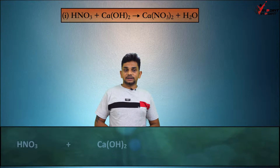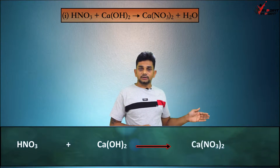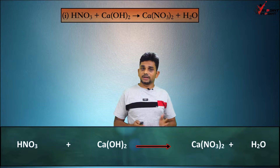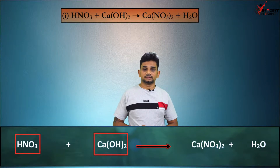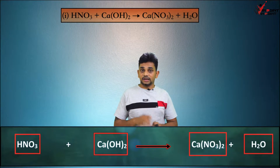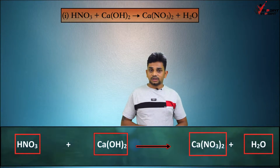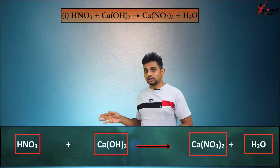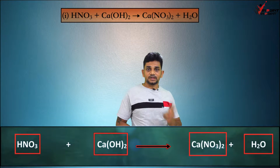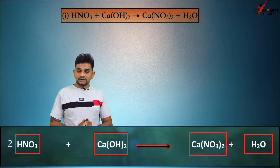Let's start balancing. In the reactant side you can see HNO3 and Ca(OH)2. In the product side you can see Ca(NO3)2 and H2O. We are making boxes in the reactant side and product side. First we count the number of NO3 groups. In the reactant side there is one NO3 in HNO3. In the product side Ca(NO3)2 has two NO3, so we add a 2 in the reactant side. Now it is 2 HNO3 and number of NO3 is balanced.